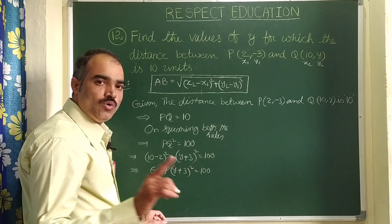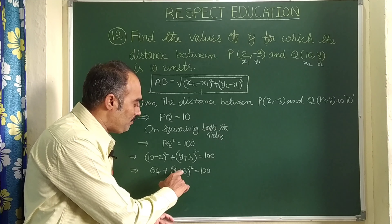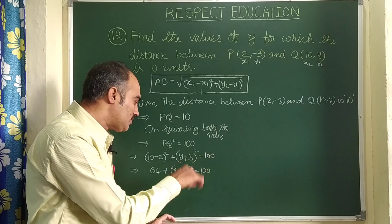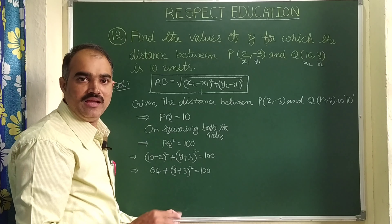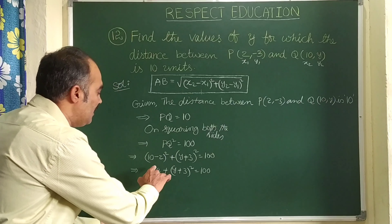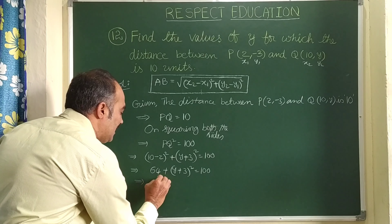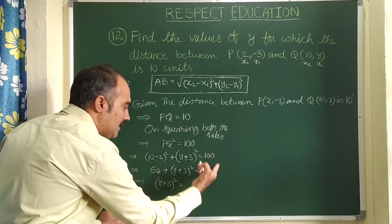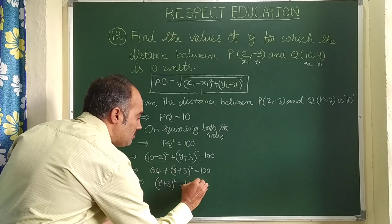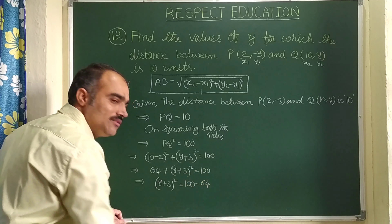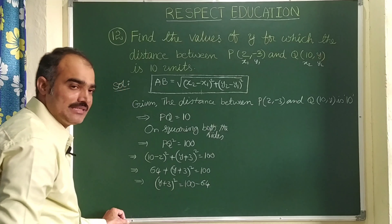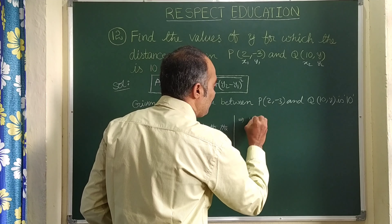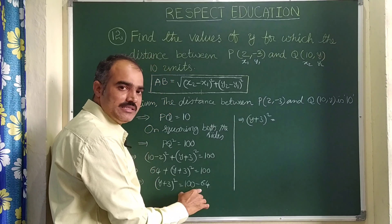There are two methods to solve. We can expand (y + 3)² using the formula (a + b)², get a quadratic equation, and solve. But the easiest way is to send 64 to the other side: (y + 3)² = 100 - 64 = 36.